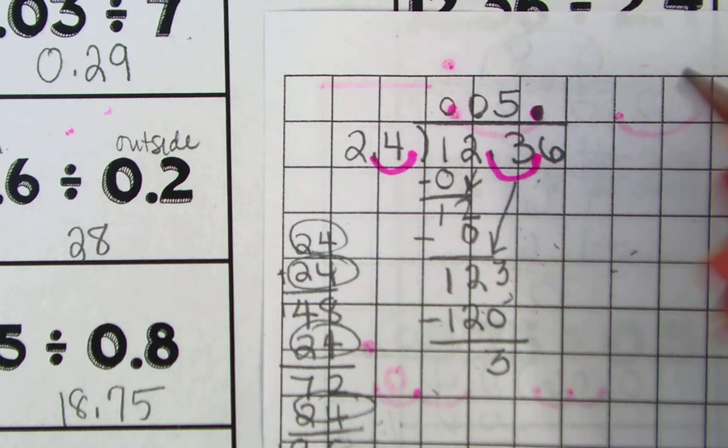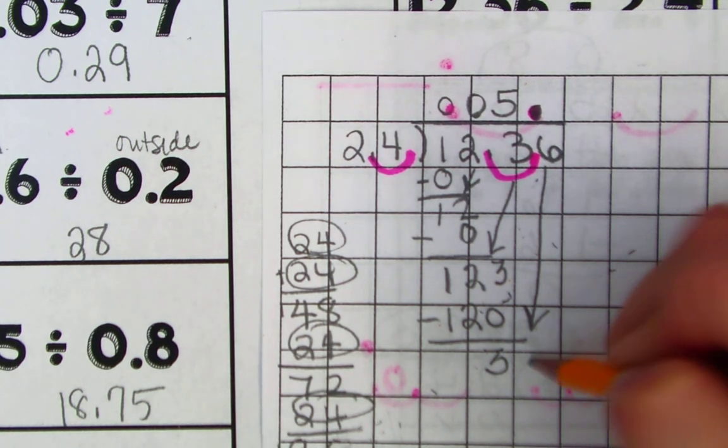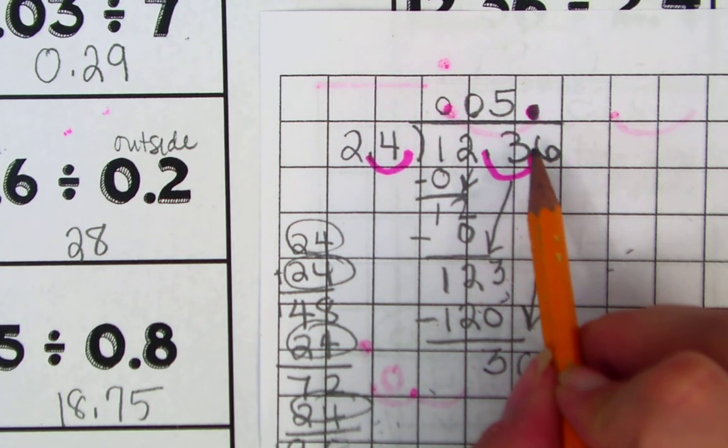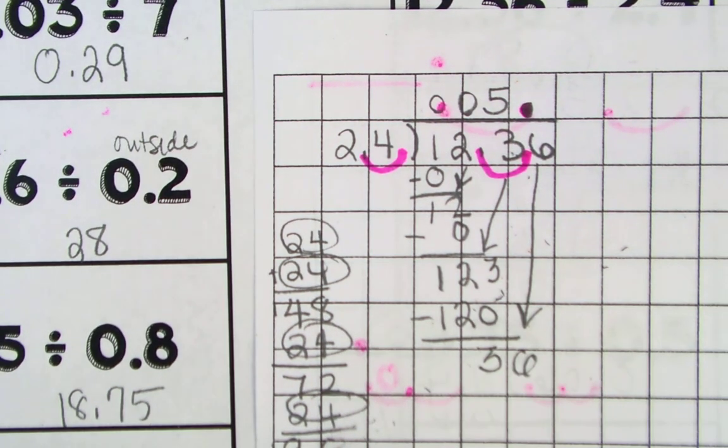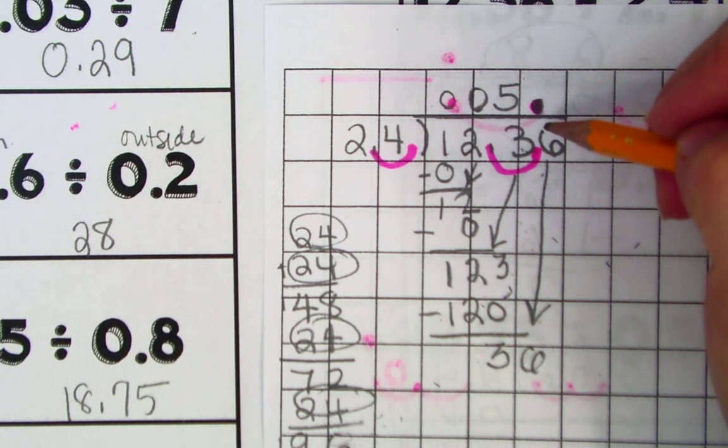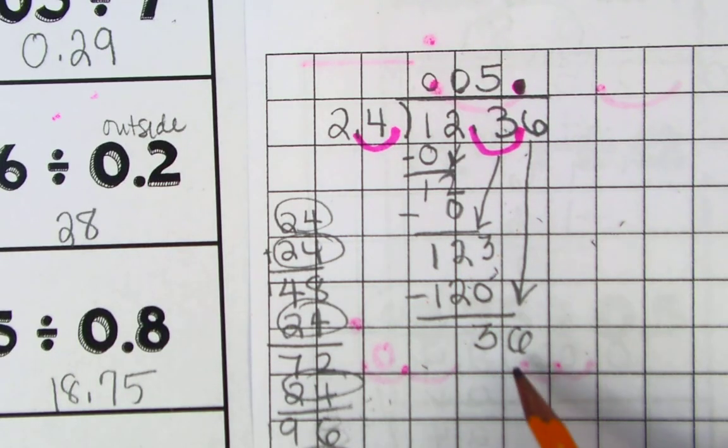I subtract. I get 3. I still have to bring down my 6. Even though there's a decimal there, I still have to bring down my 6. This division step is not going to change because there's a decimal.